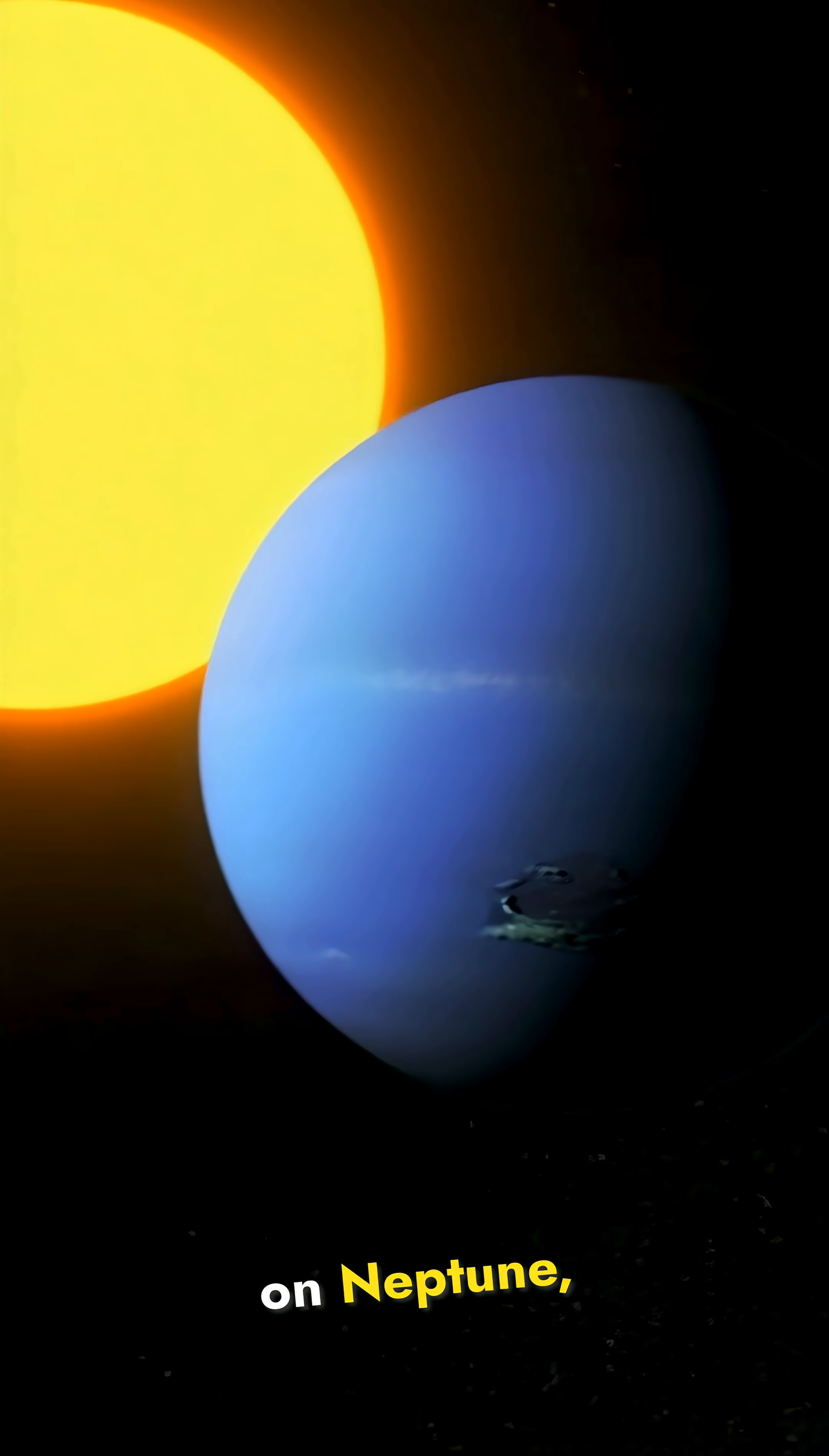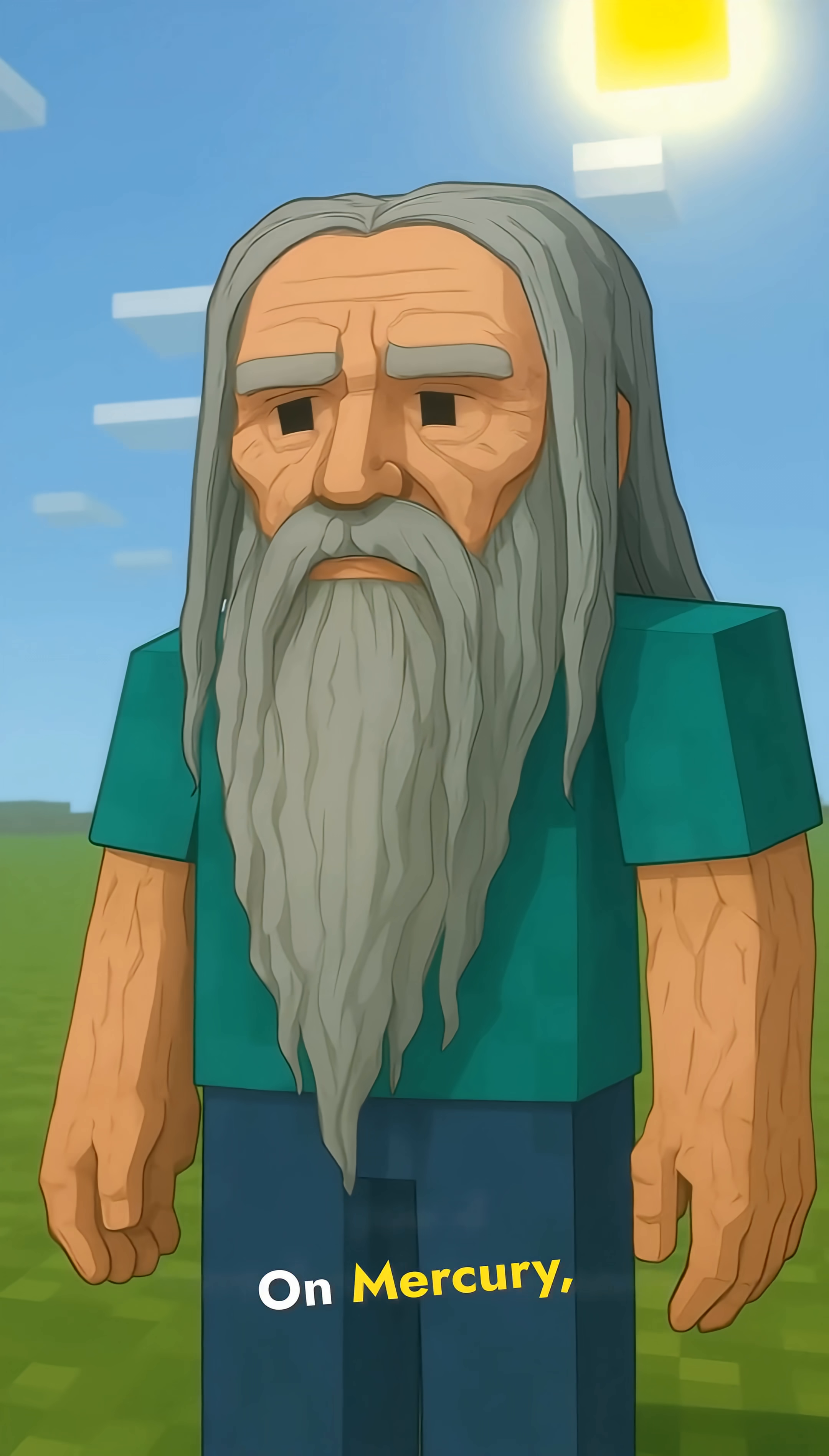Your age isn't fixed. Right now, on Neptune, you'd barely be a year old. On Mercury, you'd have lived thousands of years.